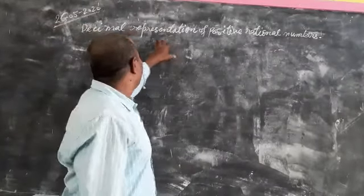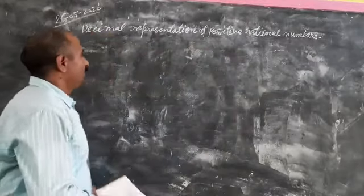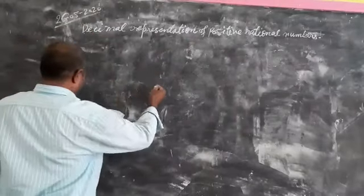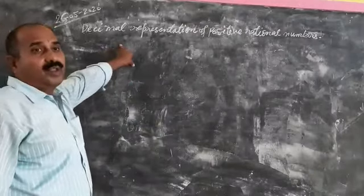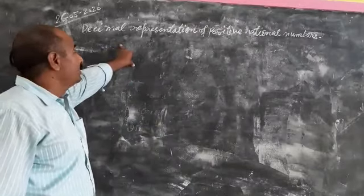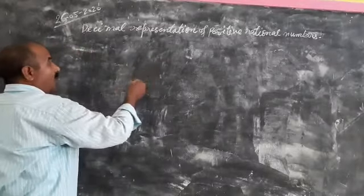First of all, I want to make you understand about decimal representation of positive rational numbers. In this rule, you have to divide the numerator by denominator. This means, when we do representation of positive rational numbers, we can divide the numerator by denominator.